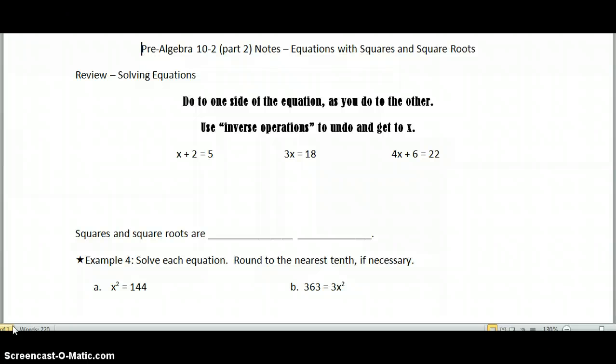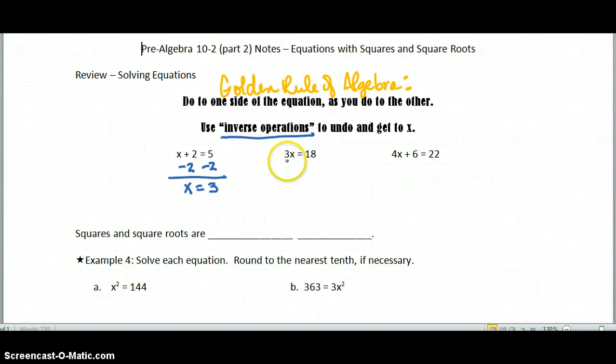All right, I'm calling this part 2 of section 10.2, where we're reviewing again how to solve equations. Remember, this is the golden rule of algebra. The golden rule says to do unto others as you would have them do unto you. And the golden rule for algebra says do to one side of an equation as you do to the other.